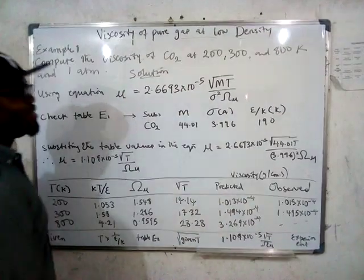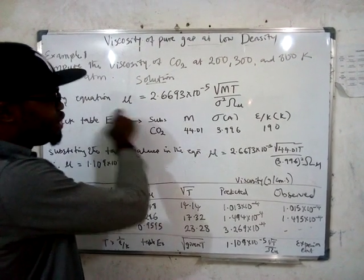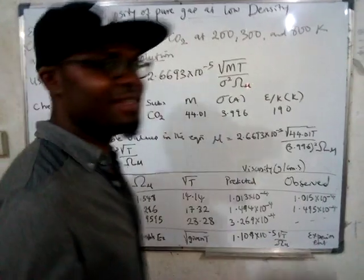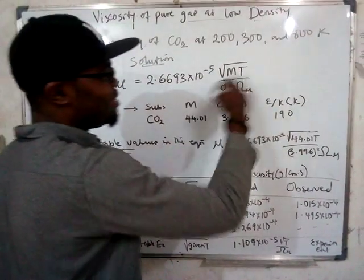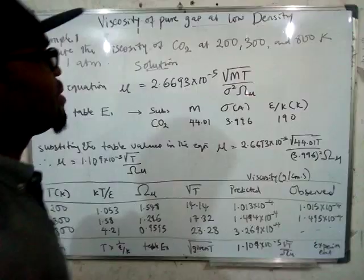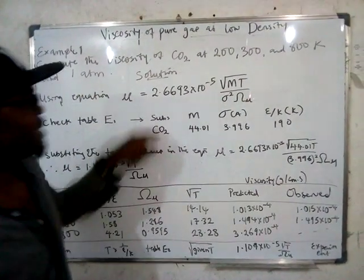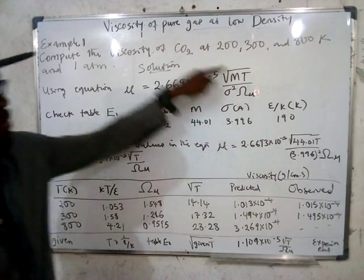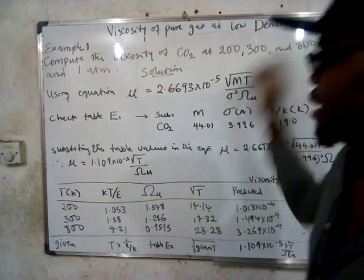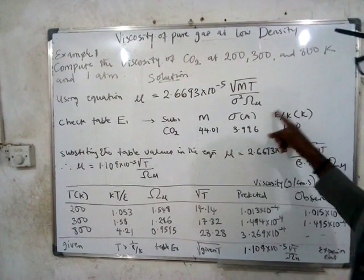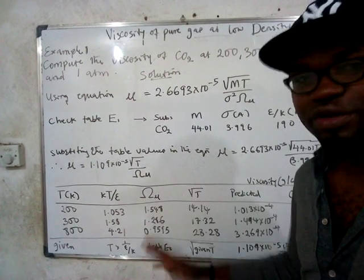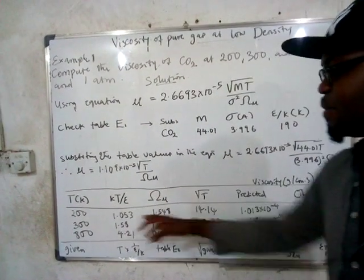In summary: the key is to know and state the formula μ = 2.6693 × 10⁻⁵ √(MT) / (σ² Ω_μ) exactly as it is. From Table E1, find M, σ, and ε/k for the given substance and substitute to reduce the equation. Then build your table: compute kT/ε using 1/(ε/k) × T, look up Ω_μ in Table E2, compute √T, and substitute into the reduced formula to get the predicted viscosity.